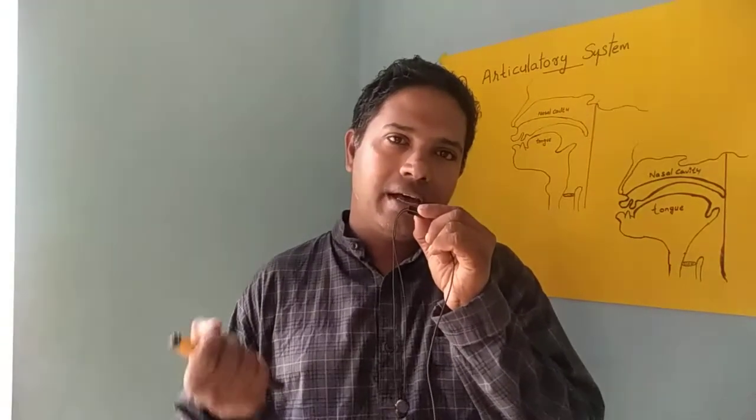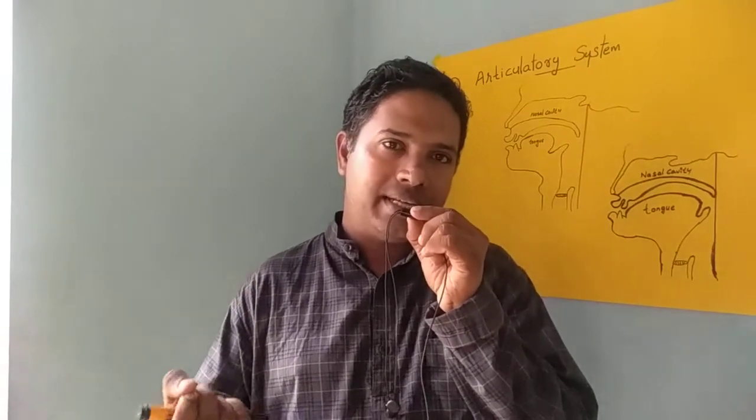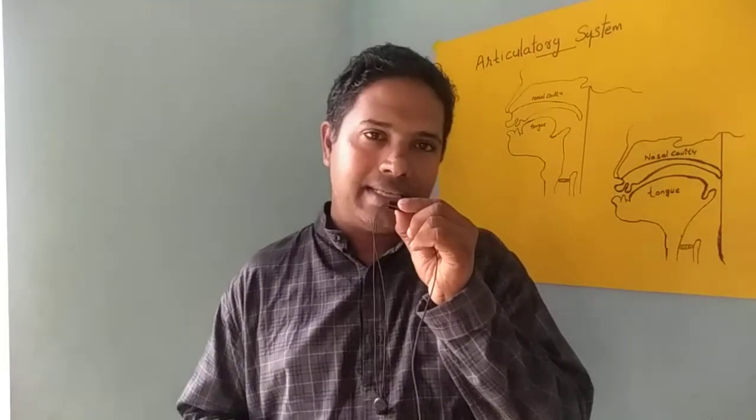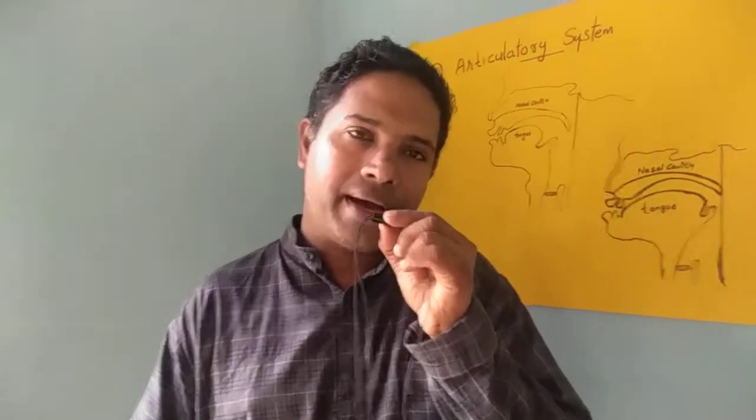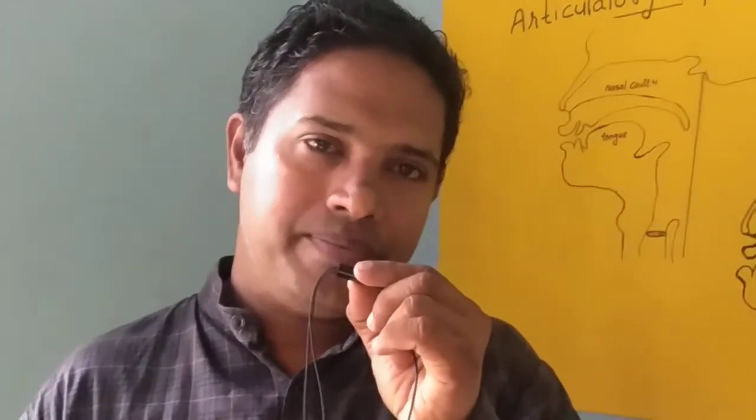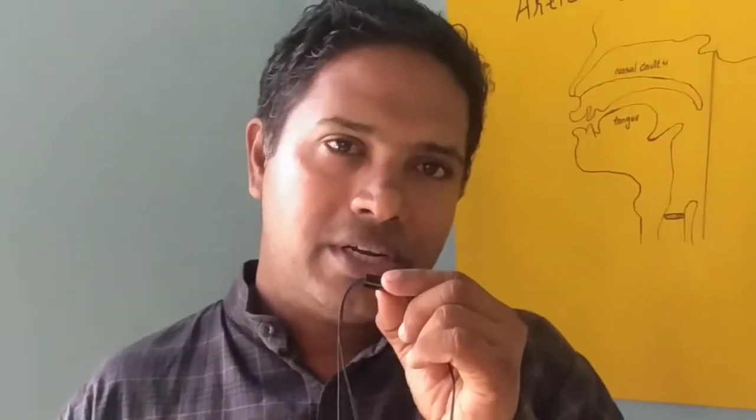The articulatory organs include the teeth ridge, hard palate, soft palate, and the uvula. The teeth ridge lies just behind the upper front teeth. It is convex and bony. Just after the teeth ridge the place becomes concave, and that place is called the hard palate — it is hard and bony. After the hard palate we can see a soft, fleshy part that is called the soft palate.